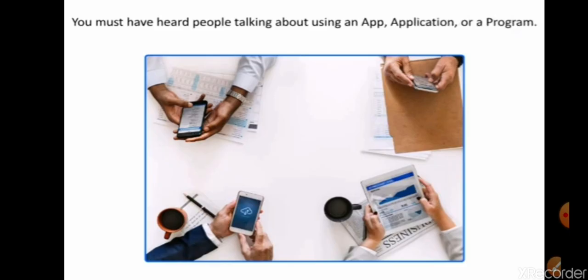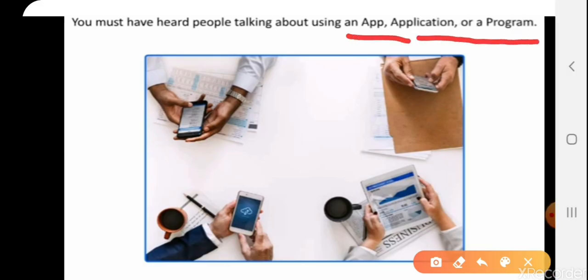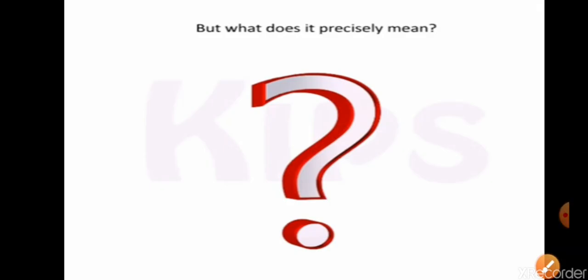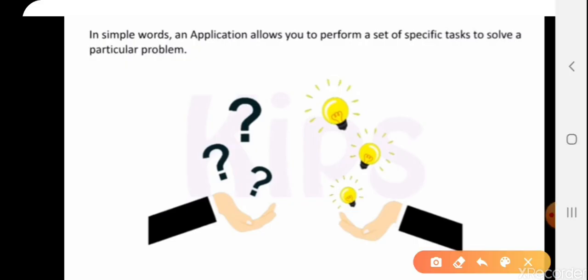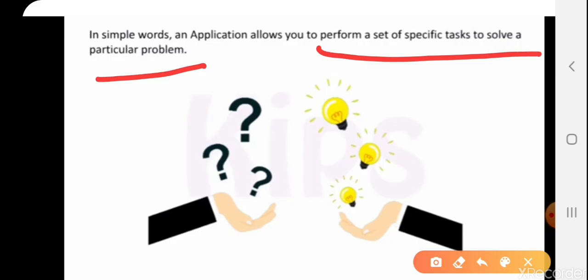You must have heard of people talking about an app or an application or a program. But what does this app or application really mean? In simple words, an application allows us to perform a set of specific tasks to solve a particular problem. The computer is a problem-solving machine, and it uses these applications to solve your particular problem. For example, a calculator inside a computer is an application or software used to solve mathematical problems.